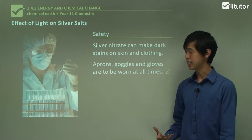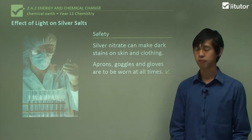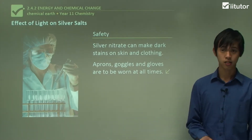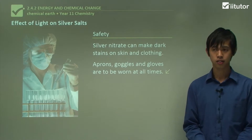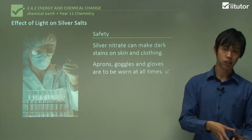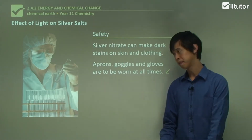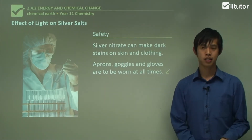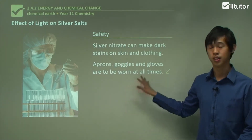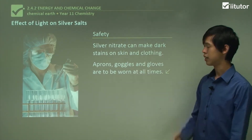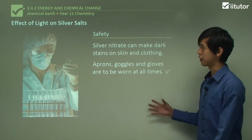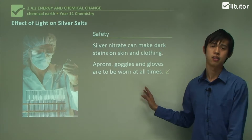That concludes today's lesson on this first-hand investigation. We've looked at what the prac is — examining the effect of light on silver salts, which turns white crystals purple then black — and we've looked at the method, how to prepare these things, and how to do this safely. Now we move on to the question segment, which will expand your knowledge and test your scientific methodologies.